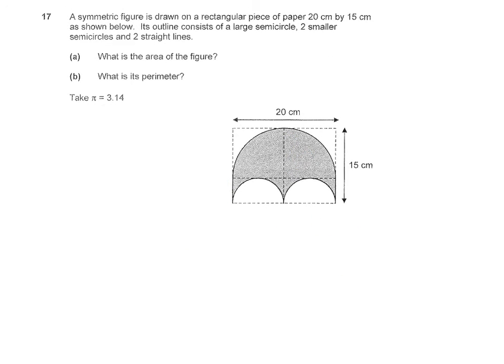Now let's look at part B. What is the perimeter of the shaded figure? Now let's look at what constitutes the perimeter. First of all, we have half the circumference of the big semicircle.